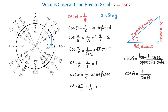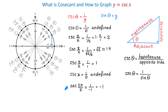Notice that at 0 and at pi the cosecant is undefined, while at pi over 2 and at 3 pi over 2, the value of the cosecant is the same as the value of sine. We know that sine of theta is represented by the y-coordinates of these points on the unit circle. At pi over 2, sine is 1, and at 3 pi over 2, sine is negative 1. The cosecant has exactly the same values at these angles.